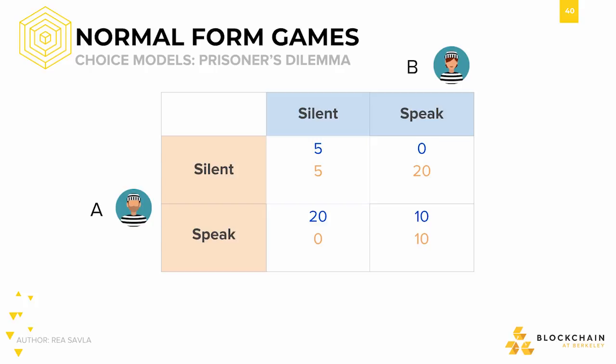If prisoner B chooses to remain silent, prisoner A will choose to speak because in doing so, he can get zero years of prison time instead of the five years he would get if he also remained silent. If prisoner B chooses to speak, then prisoner A will again choose to also speak because the 10-year penalty of them both speaking is still less than the 20-year penalty of prisoner A remaining silent while prisoner B speaks. We can deduce the same best response strategies for prisoner B. Thus, we are left with a situation where given any action of the opponent, each prisoner benefits more from speaking rather than remaining silent.